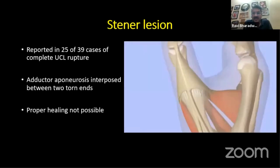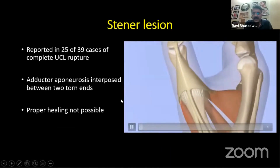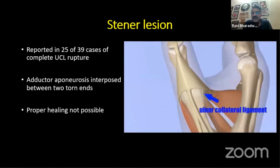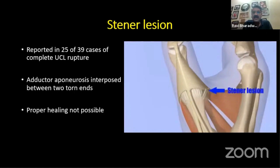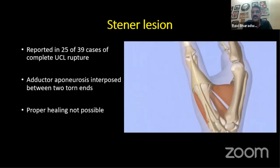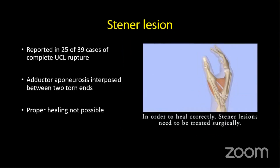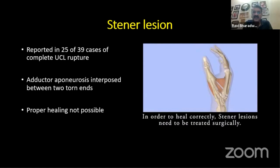Because the adductor aponeurosis is interposed between the two torn ends, proper healing is not possible. In the animation, you can see the ulnar collateral ligament and the adductor aponeurosis in normal anatomy. With an abduction injury the ligament tears, and when it snaps back the adductor aponeurosis becomes interposed — that is the Stener's lesion, which must be addressed surgically.